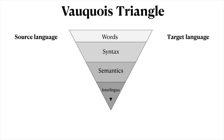There are the levels of the Vaquois Triangle: the surface form, where we have a representation of words; a deeper level with a representation of syntax; an even deeper level with a representation of semantics; and a hypothetical deepest level with an interlingual representation.